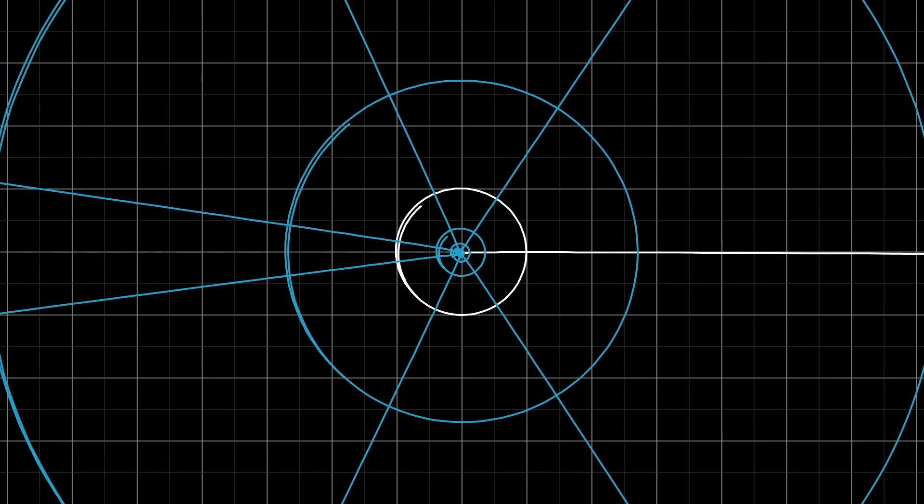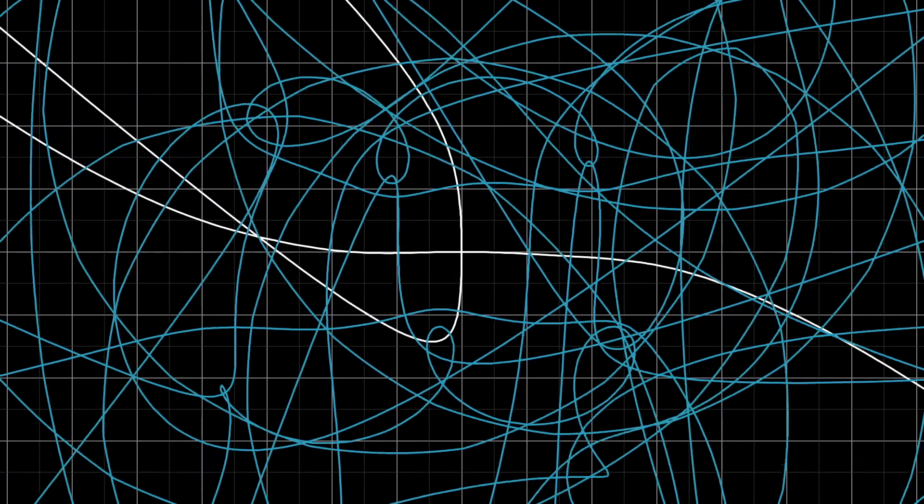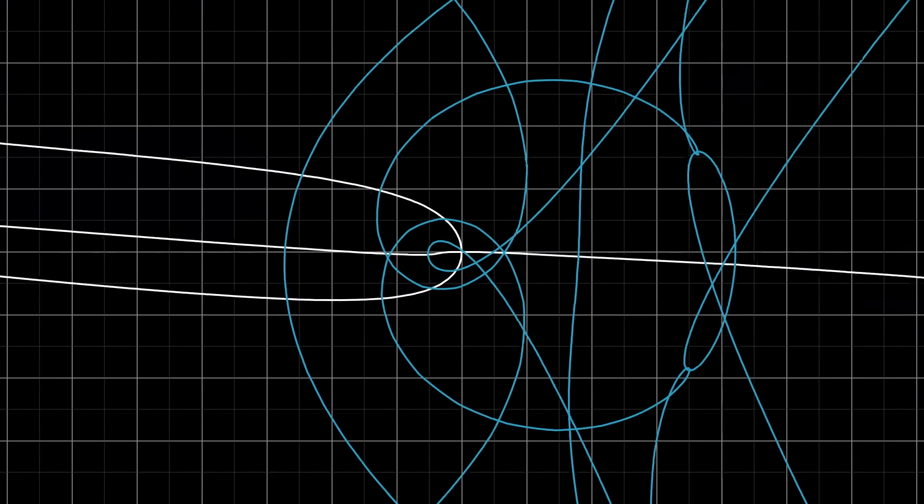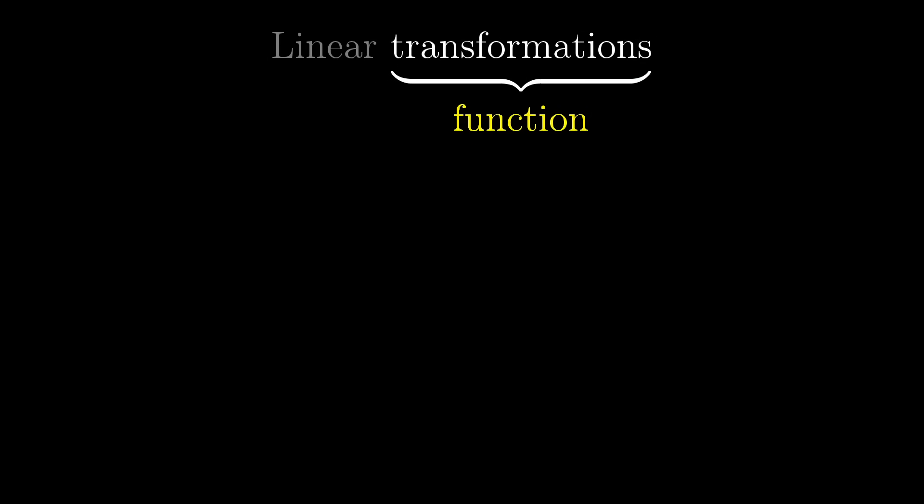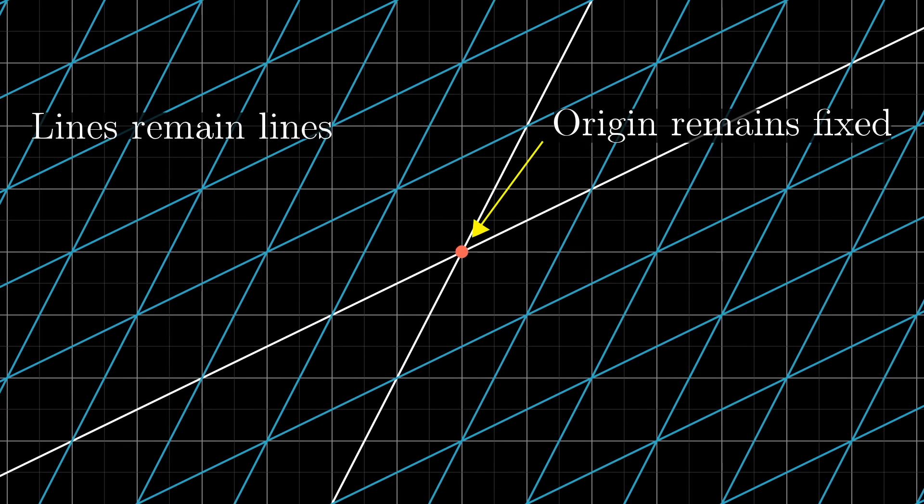As you can imagine though, arbitrary transformations can look pretty complicated. But luckily, linear algebra limits itself to a special type of transformation, ones that are easier to understand, called linear transformations. Visually speaking, a transformation is linear if it has two properties: all lines must remain lines without getting curved, and the origin must remain fixed in place.